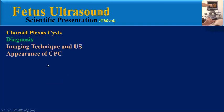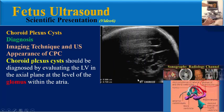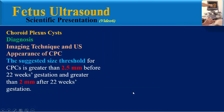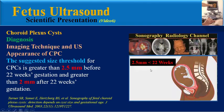What is the imaging technique and ultrasound appearance of choroid plexus cysts? Choroid plexus cysts should be diagnosed by evaluating the lateral ventricle in the axial plane at the level of the glomus within the atria. A true cyst appears as a spherical sonolucent structure surrounded by the echogenic choroid plexus. The suggested size threshold is greater than 2.5 mm before 22 weeks of gestation and greater than 2 mm after 22 weeks.